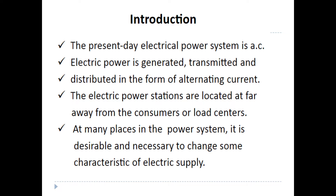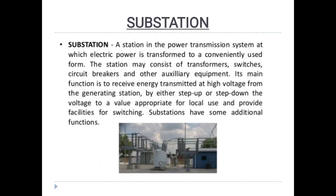We have an electrical transmission distribution system. At first, we have a substation. A substation in the power transmission system is where electrical power is transformed to be conveniently used. The station may consist of transformers, switches, circuit breakers and auxiliary equipment. Its main function is to receive energy transmitted at high voltage from the generating station by either step up or step down the voltage to a value appropriate for local use and provide facilities for switching.